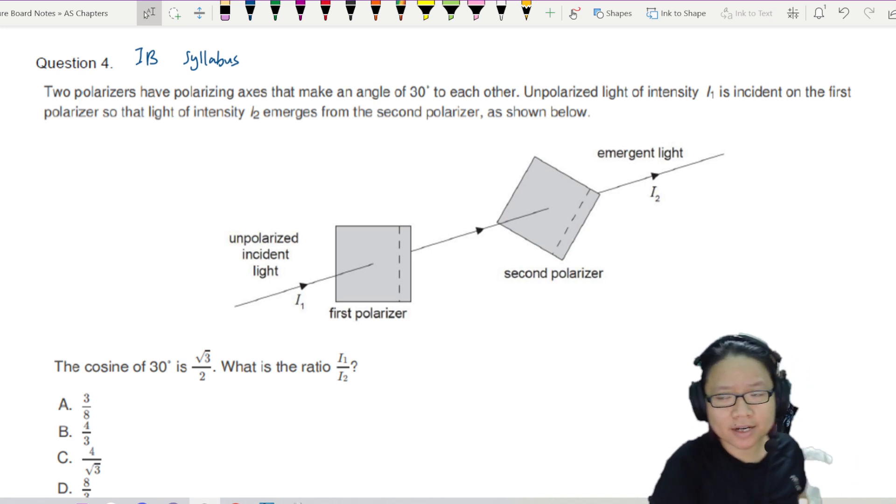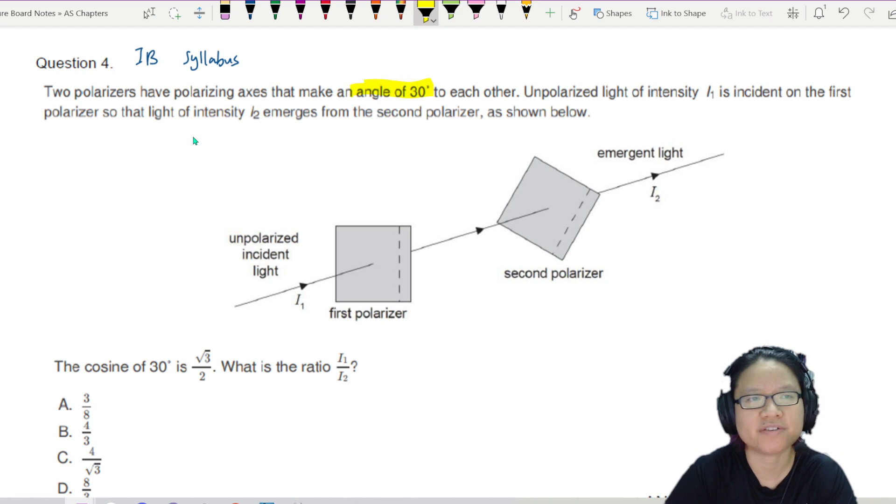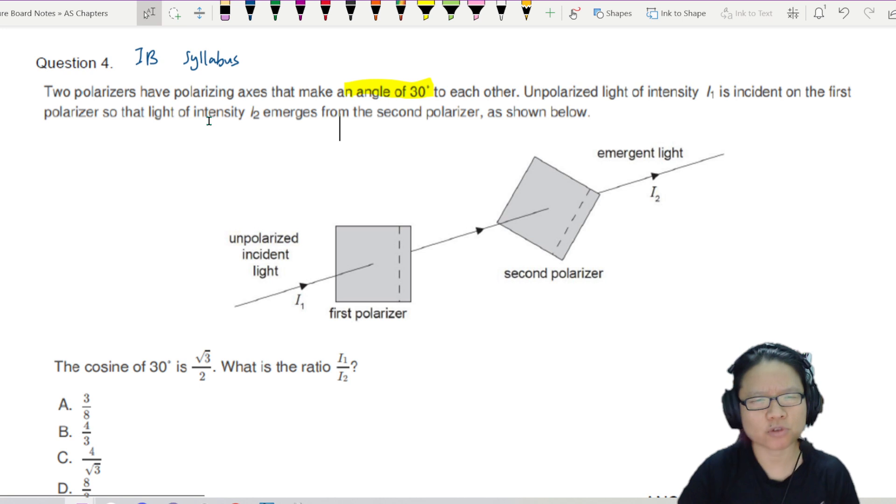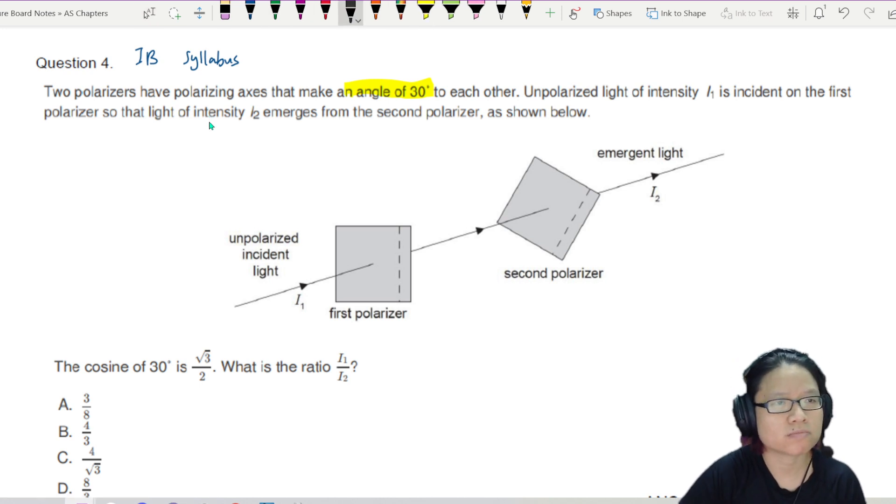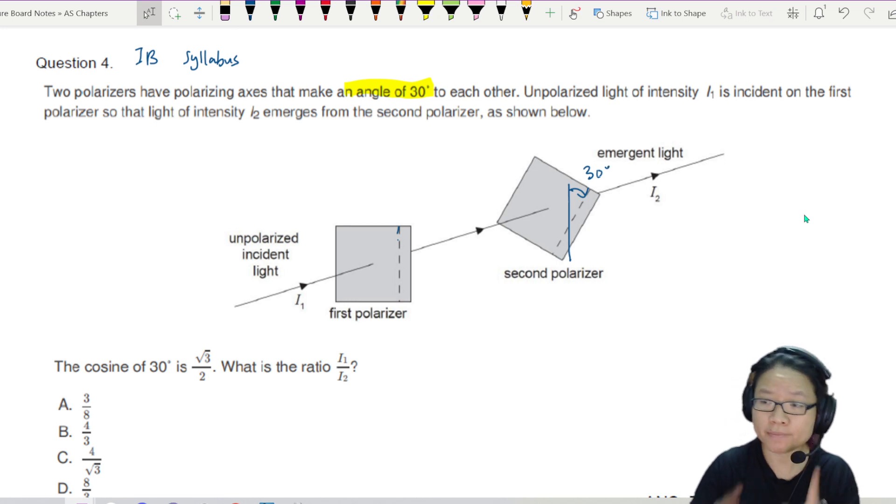And we're back. Make sure you tried the question. So here we have two polarizers having polarizing axes at an angle of 30 degrees to each other. You see that in this particular drawing, they use the dotted line to show the polarizing axis. This first one is in this direction. I'm going to draw a line to mark out that direction. If I put it here, it means that it has rotated an angle of 30 degrees.